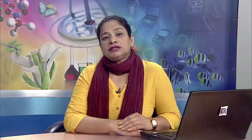Wind and water erosion are two primary causes of land degradation; combined they are responsible for 80 percent of degraded land. Some major causes of land degradation are use of agrochemicals, chemical fertilizers and pesticides, cultivation of high-yielding plant varieties and excessive irrigation. Other causes include deforestation, overgrazing, commercial development, quarrying of sand, ore and minerals, monoculture and soil erosion.